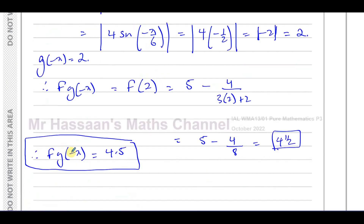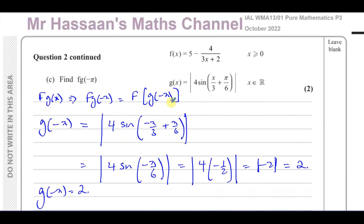That's the composite function — one function going inside the other. It was easier here to find g(−π) first and then put it into f, rather than finding the complicated expression for fg(x) first. That's the answer to question 2C.